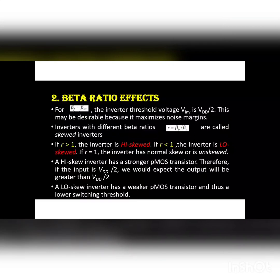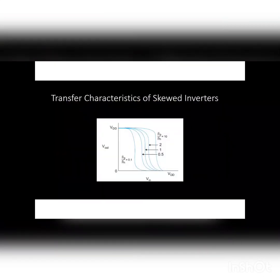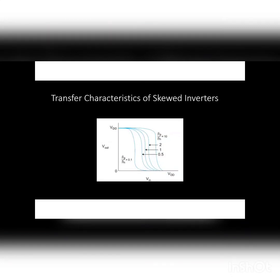For high-skew inverters, there is an important characteristic: a high-skew inverter has a stronger PMOS transistor, while a low-skew inverter has a weaker PMOS transistor. A low-skew inverter has a lower switching threshold. This is shown in the transfer characteristics of skewed inverters for R equals beta_P/beta_N. Curves are drawn for R equal to 1, 0.5, 2, 10, and 0.1.